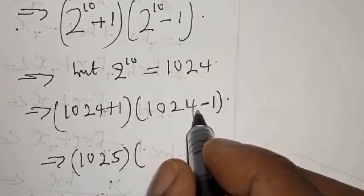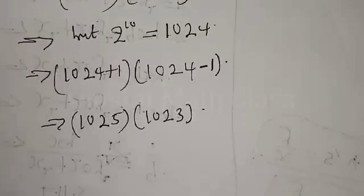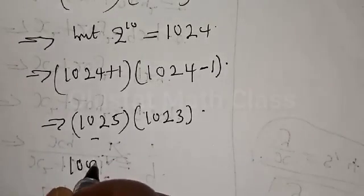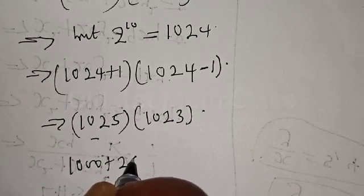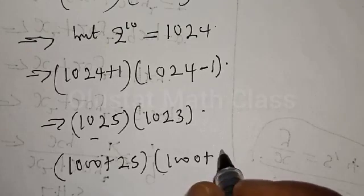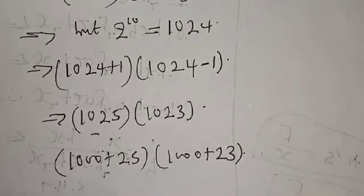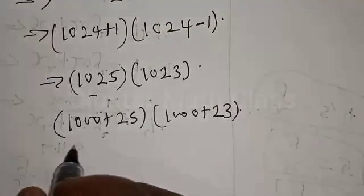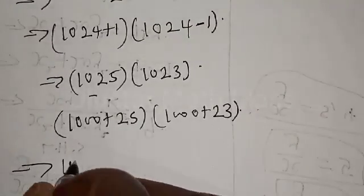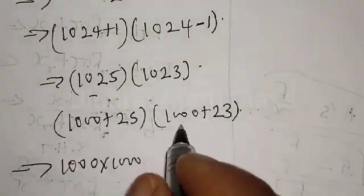1024 minus 1 is 1023. Now this can be expressed as we have 1000 plus 25, into 1000 plus 23. So 1025 into 1023 becomes 1000 plus 25 times 1000 plus 23.